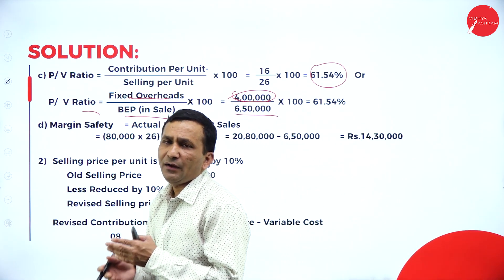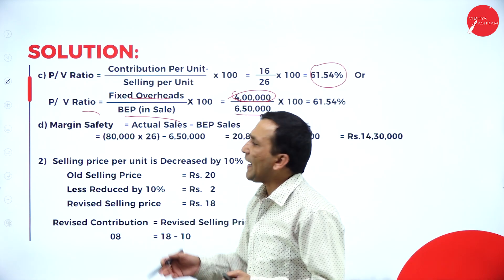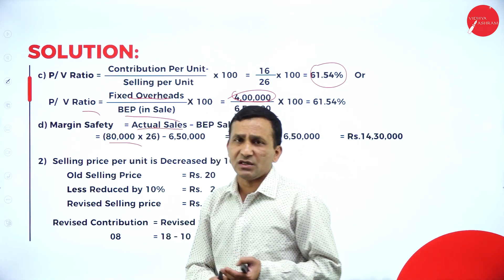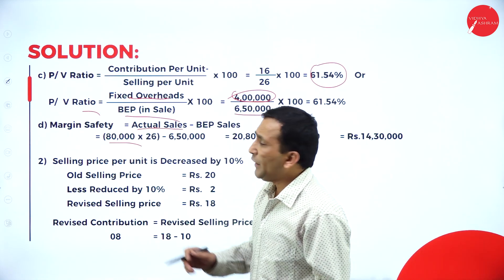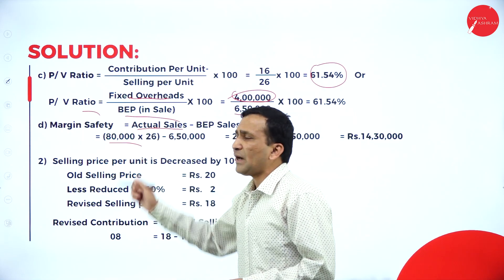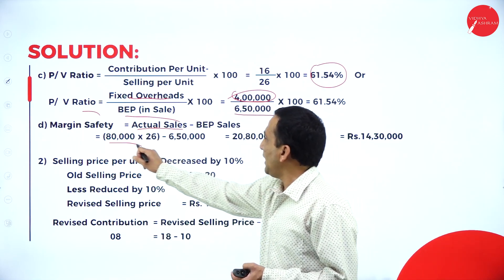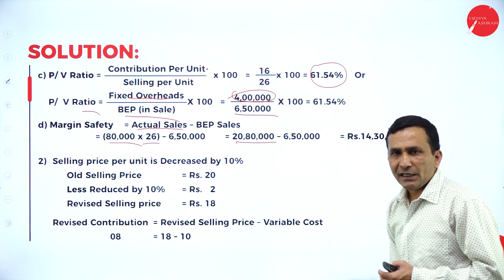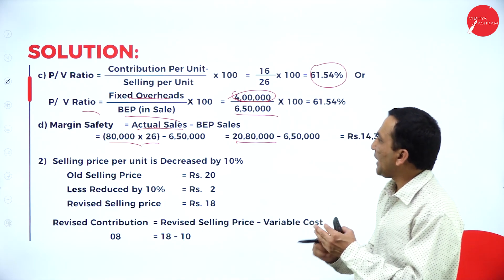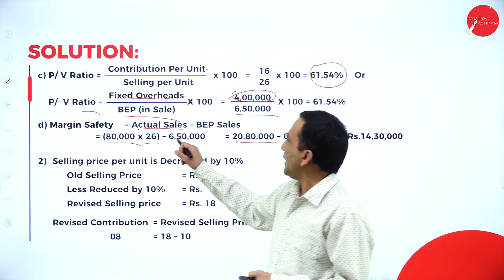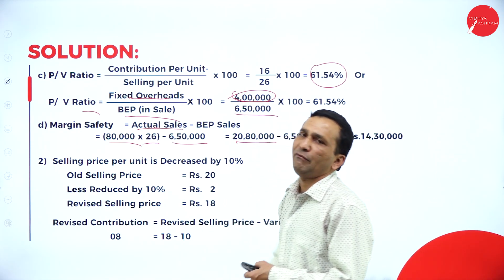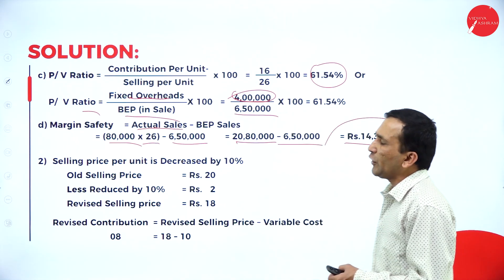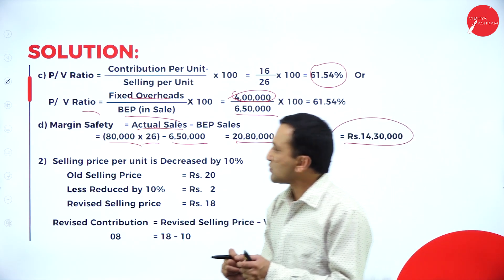Margin of safety for the 30% increase scenario: actual sales = 80,000 × ₹26 = ₹20,80,000. Break-even sales = ₹6,50,000. Margin of safety = ₹20,80,000 − ₹6,50,000 = ₹14,30,000.